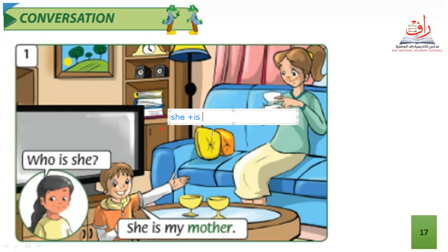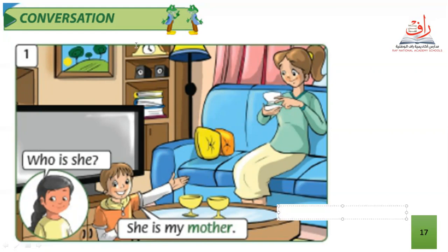Why do we choose 'she' and not 'he'? Because we are talking about mother, and the mother is a girl. Let's read again altogether: Who is she? She is my mother. She is my mother. This is a place in the living room.